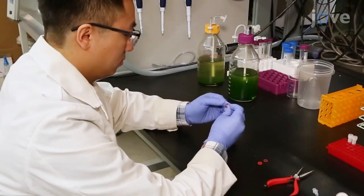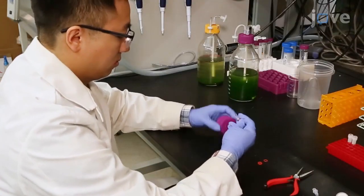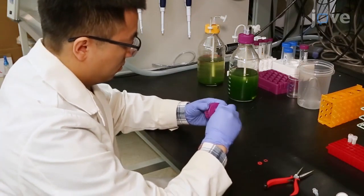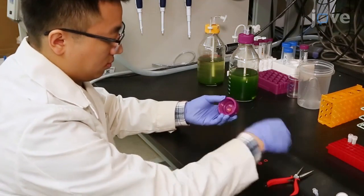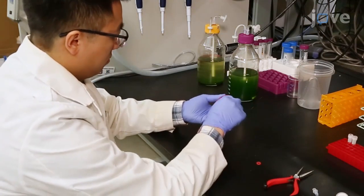To begin setup of the bubble column photobioreactors, construct a set of vented lids from the plastic lids of the 1.0-liter glass bottles and hybridization tubes as described in the text protocol.